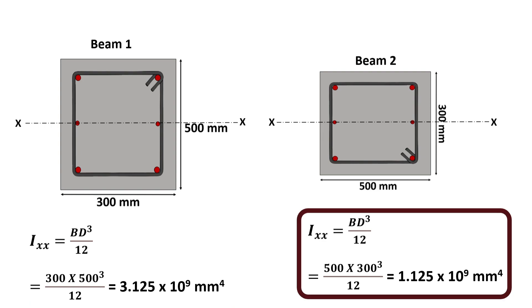For beam 2, the width is 500 mm and depth is 300 mm. On substituting these values, the moment of inertia for beam 2 will be 1.125 into 10 to the power 9.